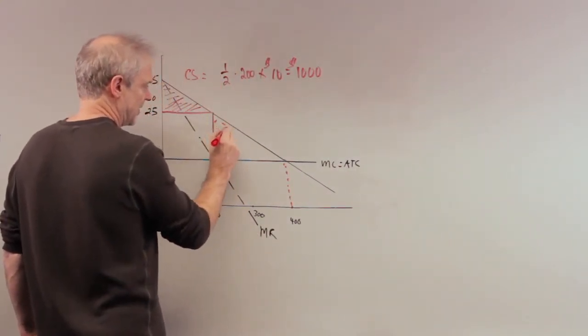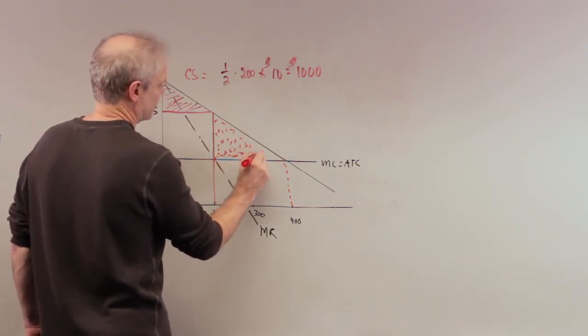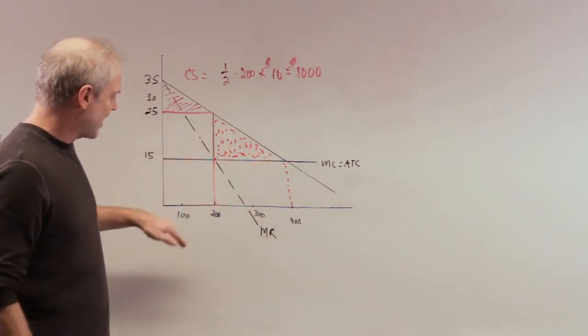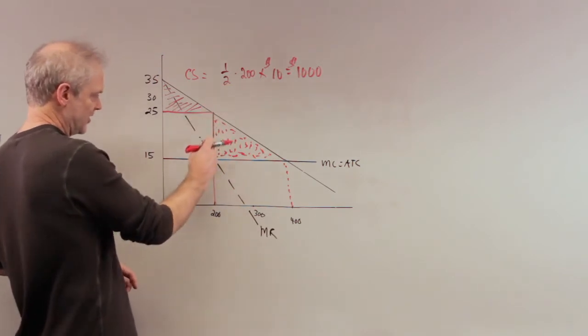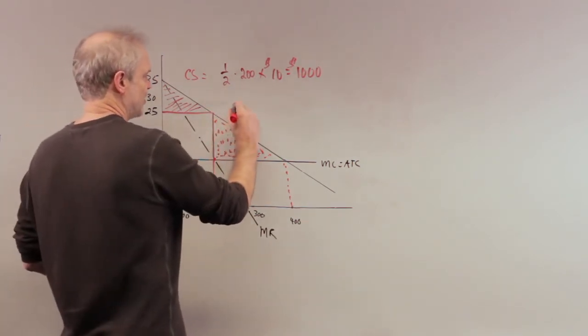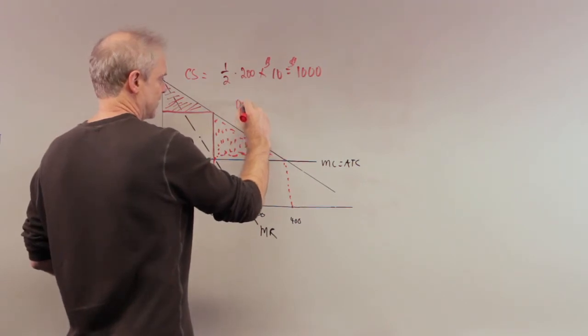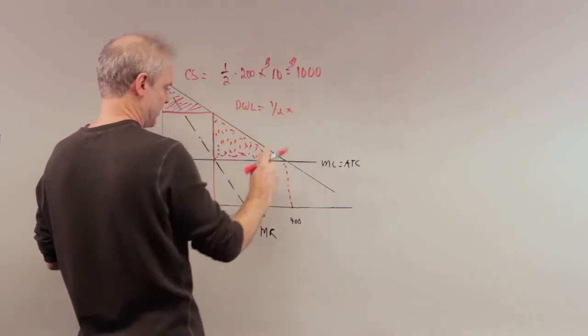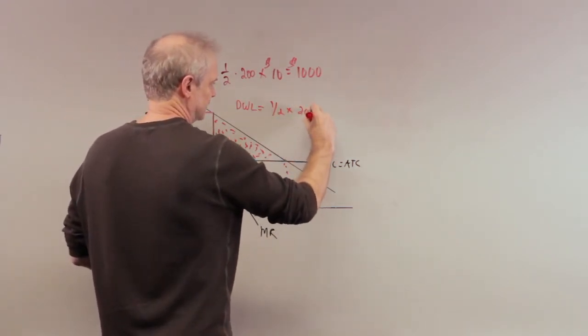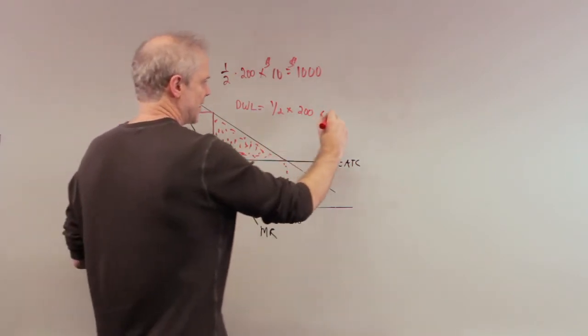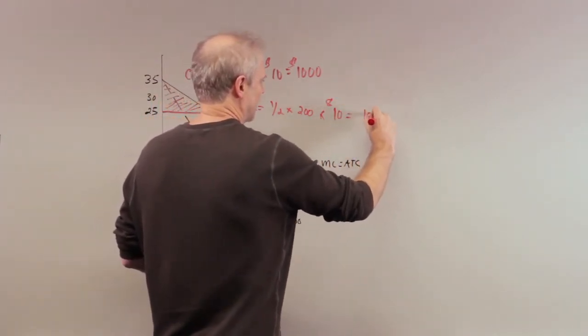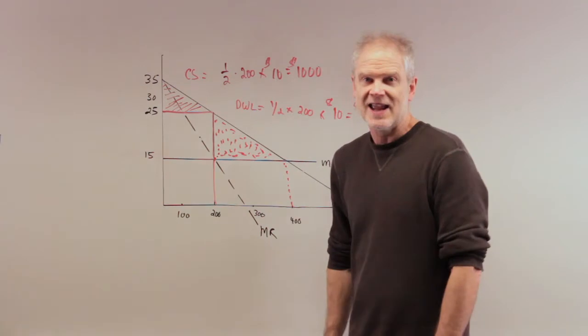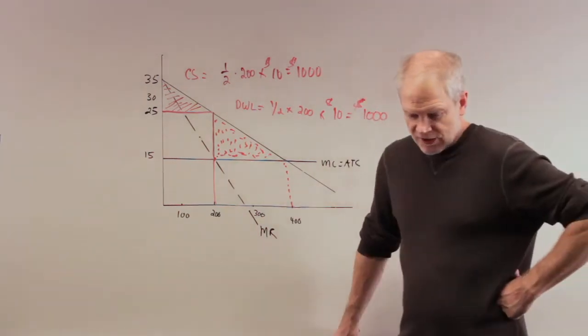Now you've got the deadweight loss colored in. You have to compute another triangle. We've got this triangle with a base of 200 and this distance of ten. Deadweight loss equals one half times 200 units times 25 minus 15, times ten dollars. Lo and behold, it's also going to equal a thousand dollars.